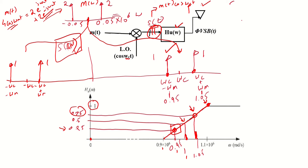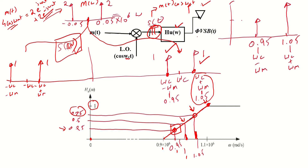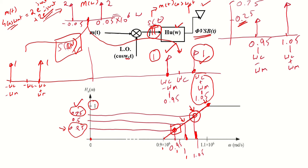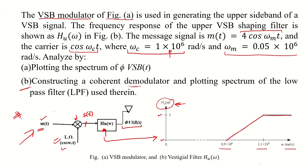Multiplying the delta functions by the filter values: the delta function at ω_c+ω_m has strength 1 and the filter gain there is 0.75, yielding 0.75. At ω_c−ω_m (0.95), the filter gain is 0.25, yielding 0.25. This concludes part A — plotting the spectrum φ_VSB(ω).